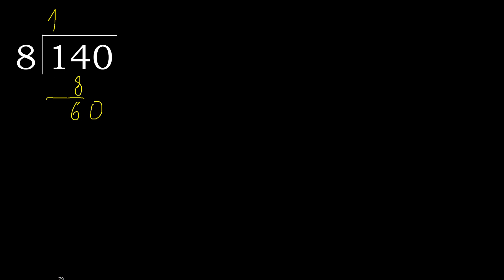60. 8 multiplied by 8 is 64, which is greater. Multiply by 7: 56 is not greater. 60 minus 56 is 4. Next.